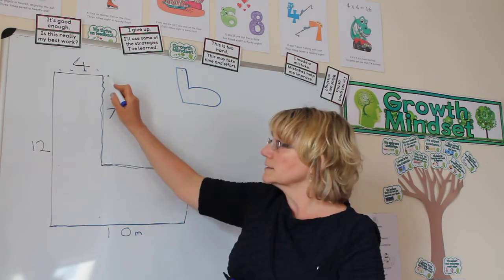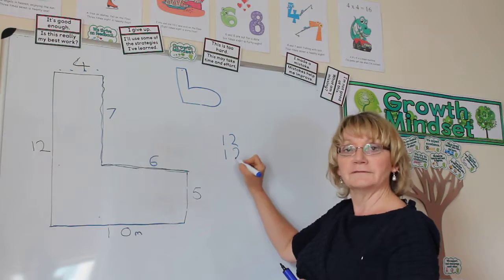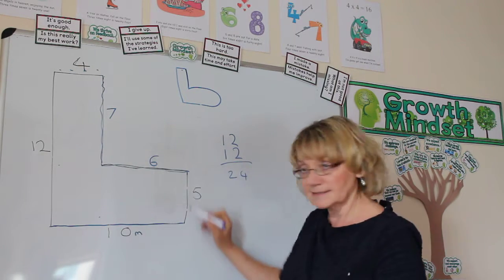12 has always got 12 facing it. So we can do 12, add 12, which is 24, and that's for that side, plus its opposites added together.